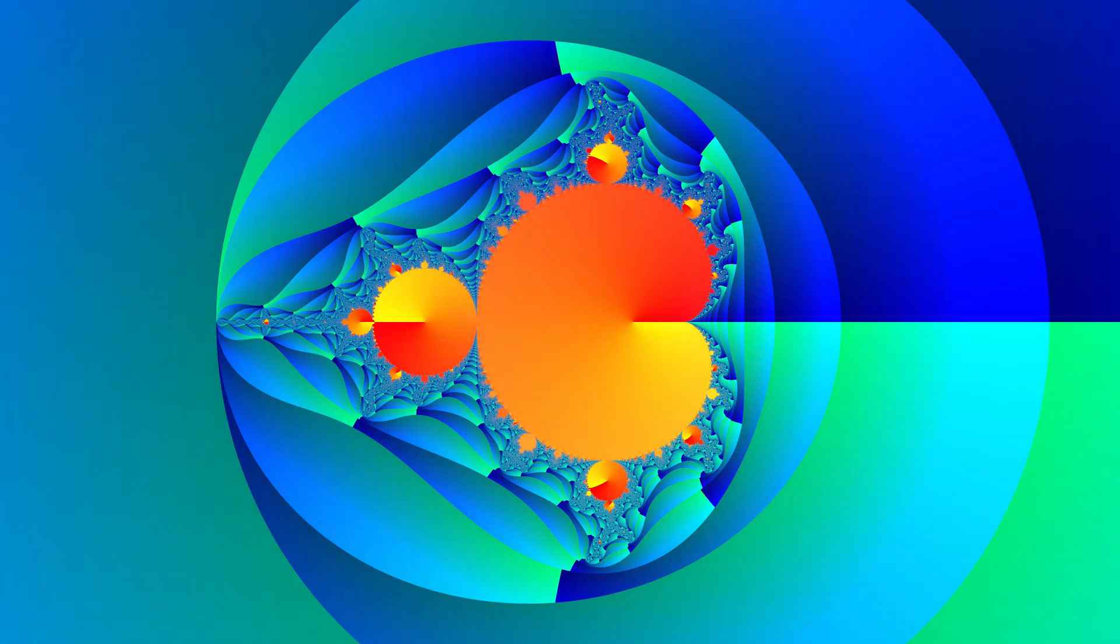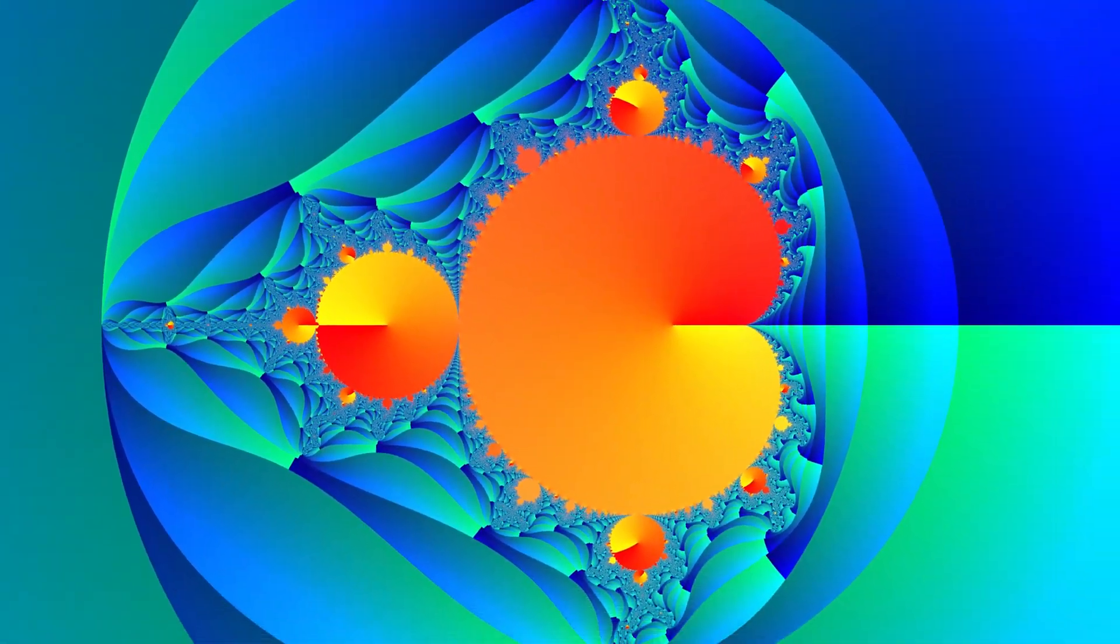This next one also uses the number of iterations, which is represented in red. The value is represented in blue and the angle in green. And now to something special which actually only shows the value.